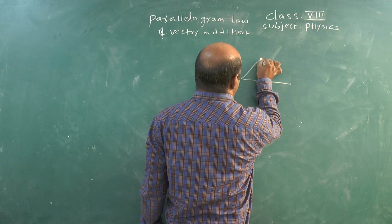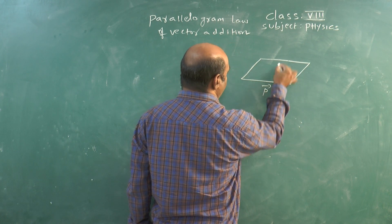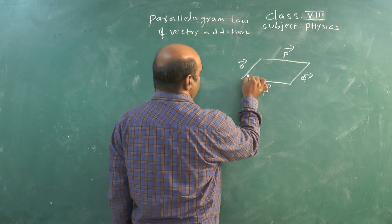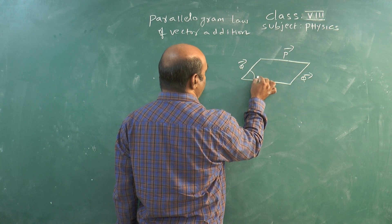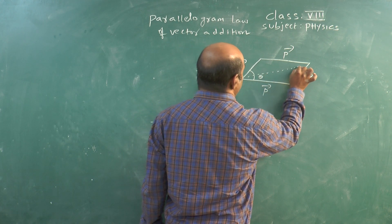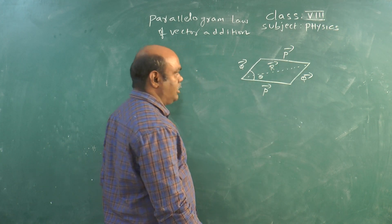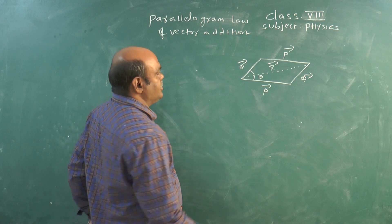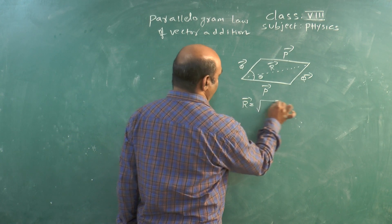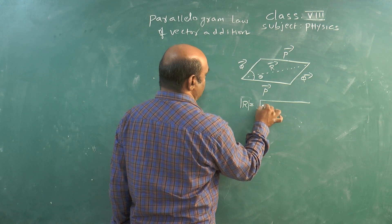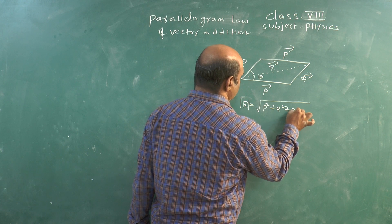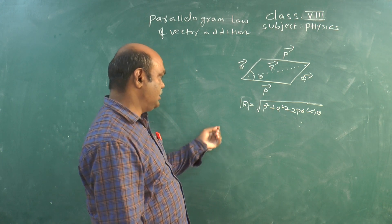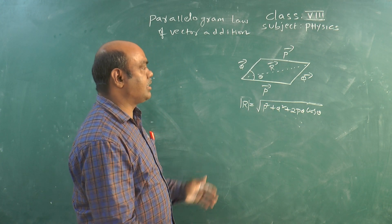Here is the concept. If it is P bar, and also Q bar, the angle between these two vectors is theta. The diagonal of the parallelogram is called the resultant of the vectors. The mathematical formula for the magnitude of R bar is: R equals square root of P squared plus Q squared plus 2PQ cos theta. This is the formula for the resultant vector of two vectors inclined at a certain angle.